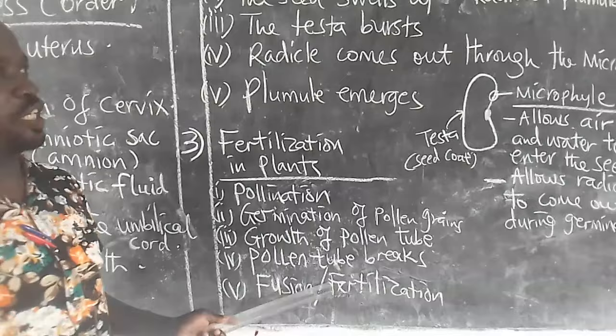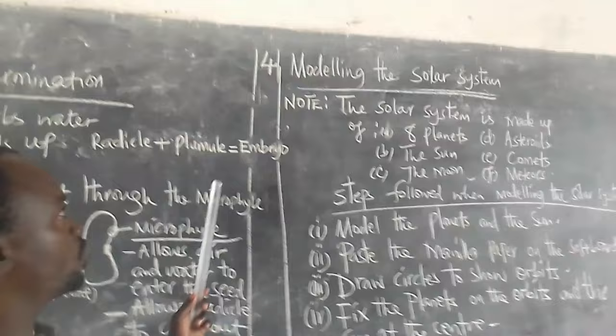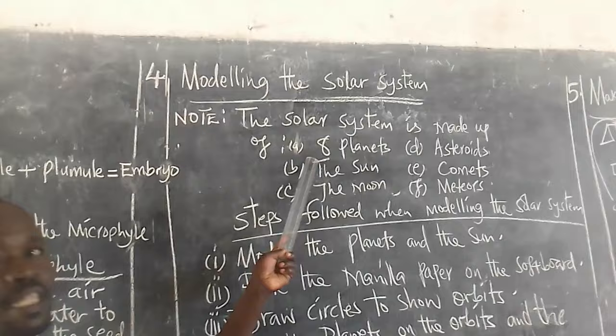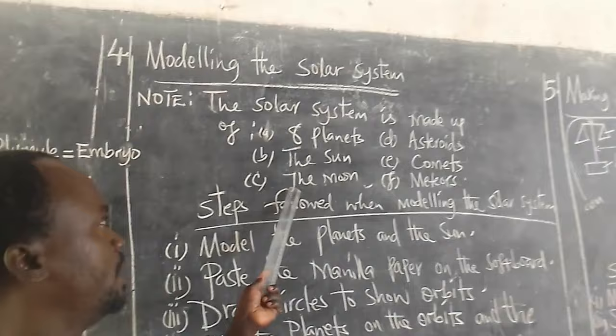We go to number 4: modeling the solar system. Note — remember, the solar system is made of the following: one, the eight planets; two, the sun; three, the moon; four, asteroids; comets; and meteors.